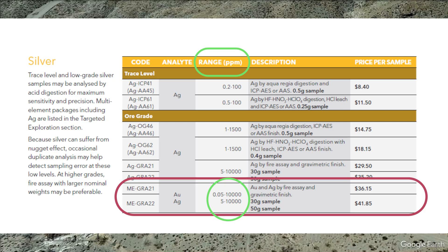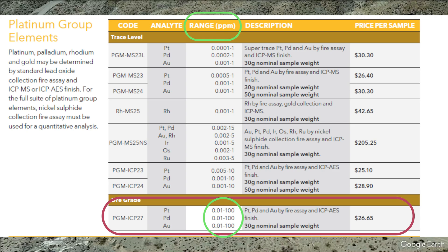We chose test method ME-GRA21 and 22, which is a fire assay for gold and silver with a gravimetric finish. We chose the 50-gram sample size. In green you can see the lower and upper detection limits: for gold it's 0.05 up to 10,000 parts per million; for silver it's 5 to 10,000 parts per million. We also chose test method PGM-ICP27, a fire assay for platinum, palladium, and gold with an ICP-AES finish, with a lower detection limit of 0.01 up to 100 parts per million for each precious metal.